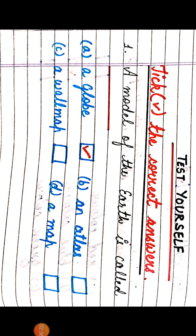Now the next part is Test Yourself. There is one MCQ. The question is: a model of the earth is called ___. The options are: Option A, a globe; Option B, an atlas; Option C, a wall map; Option D, a map. The correct answer is a globe.